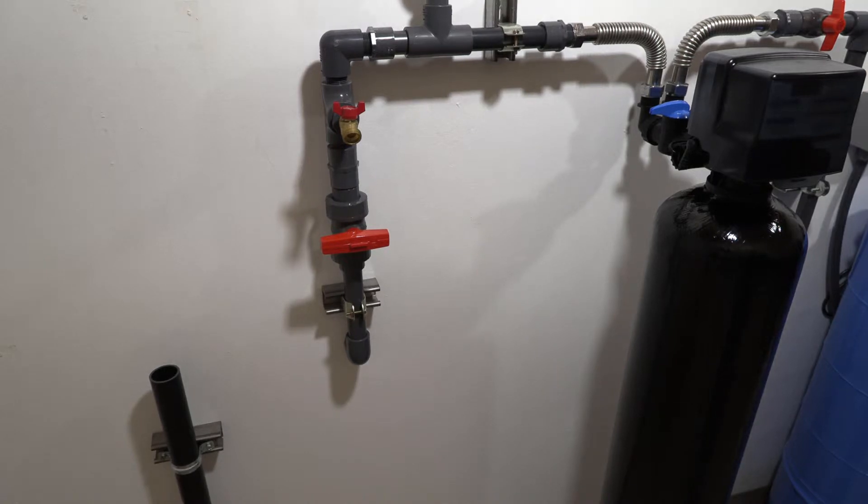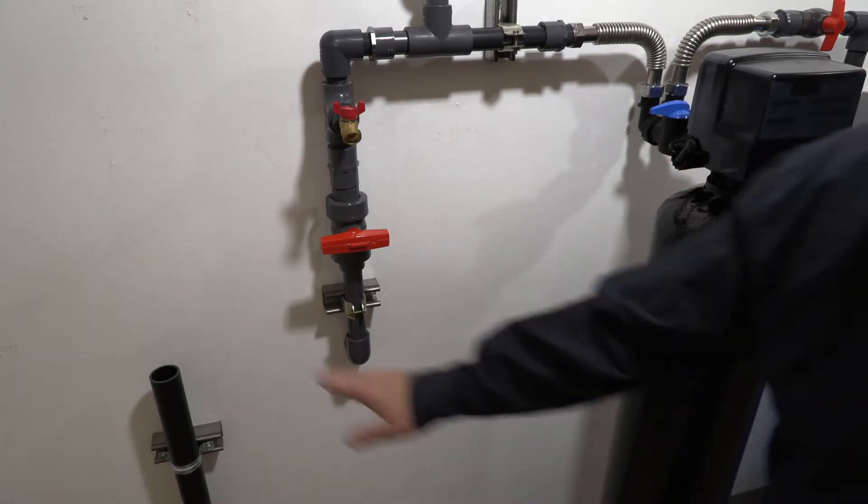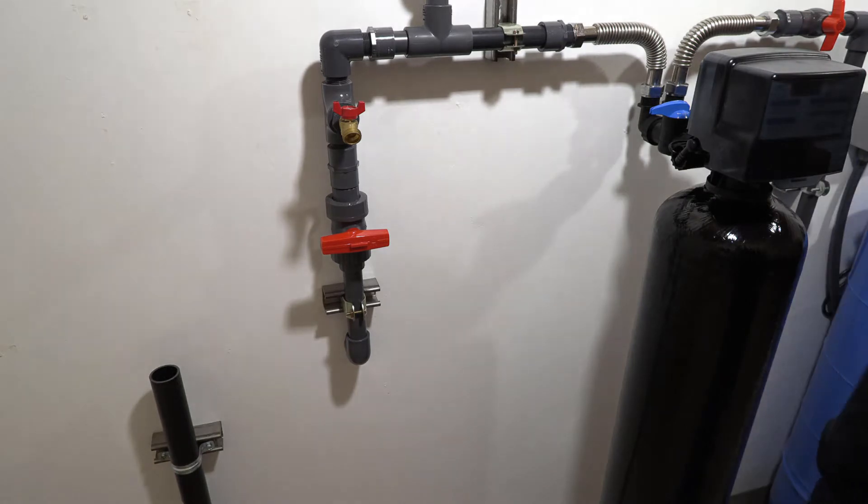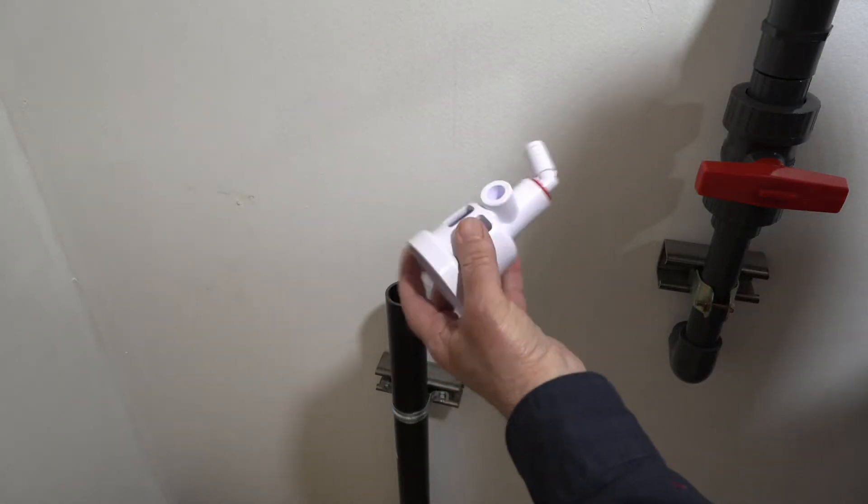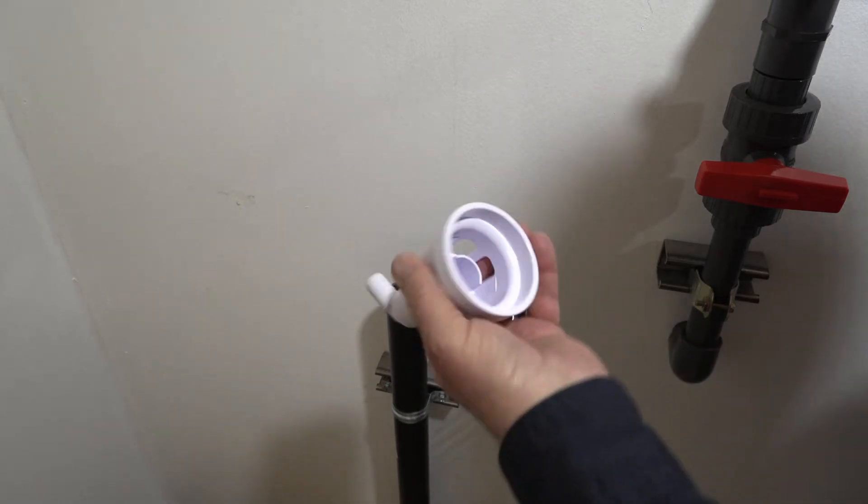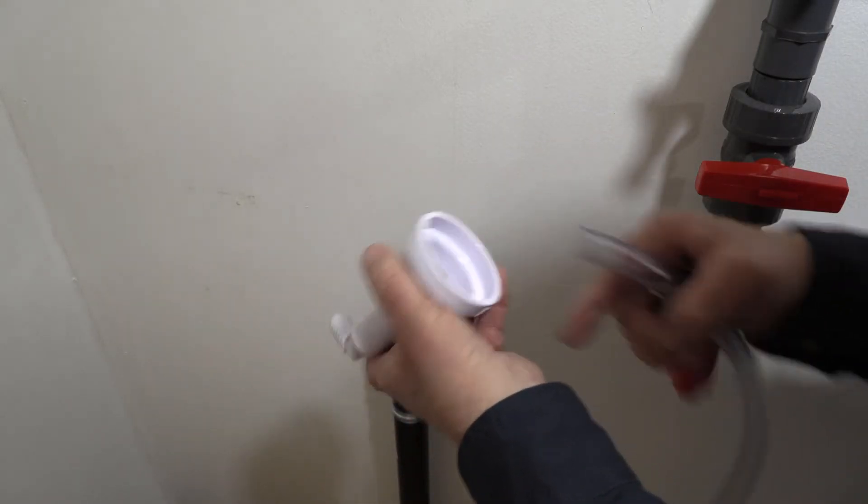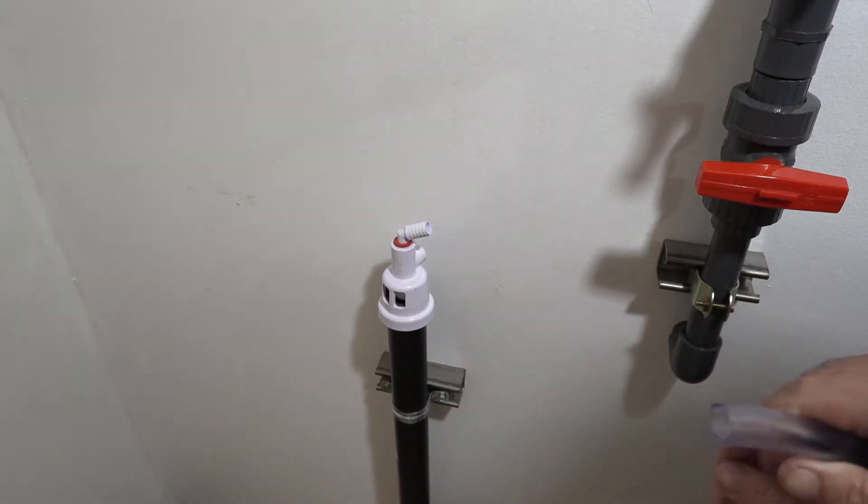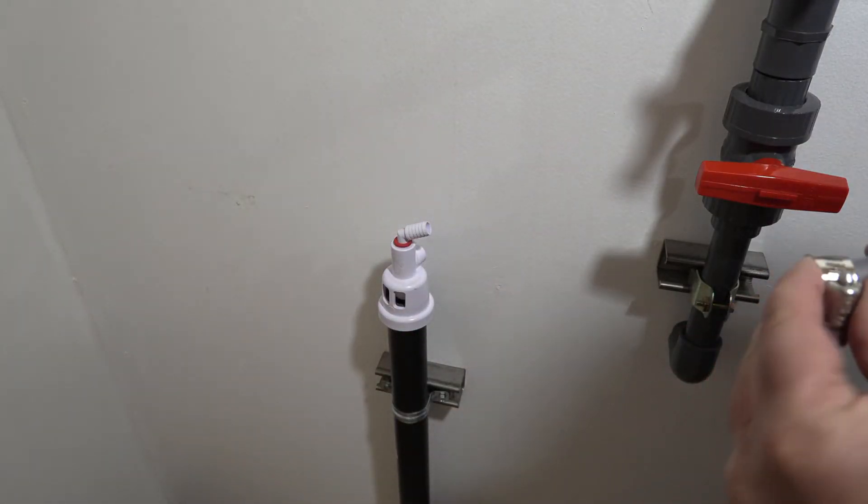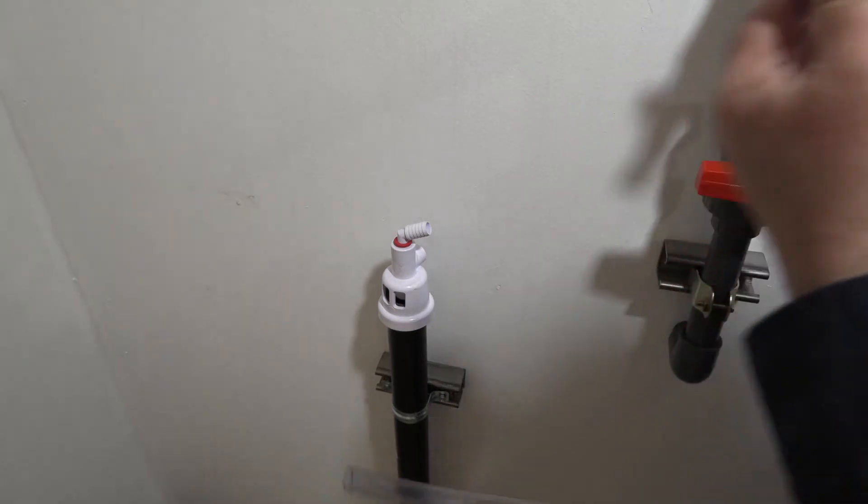Now we're going to hook our drain line up from the side of the valve here to our facility drain. For the facility side of the drain line, we also sell as an option the air gaps. You would just use PVC primer and cement for that and glue that on. We also offer drain line, just 5/8-inch clear tubing.